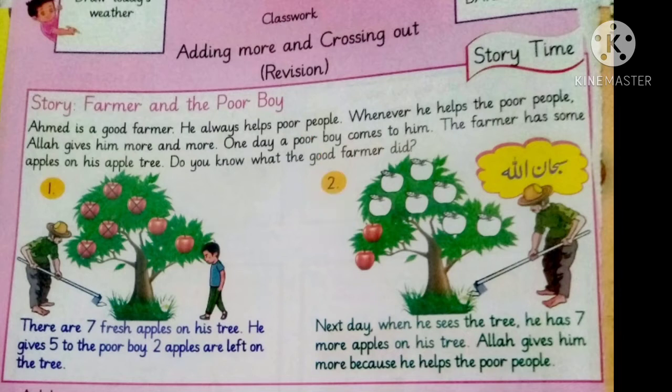Next day, when he sees the tree, he has 7 more apples on his tree. Allah gives him more because he helps the poor people. So he gave 5 apples but Allah gave him 7 more apples. It means when we help others, Allah gives us more than that.